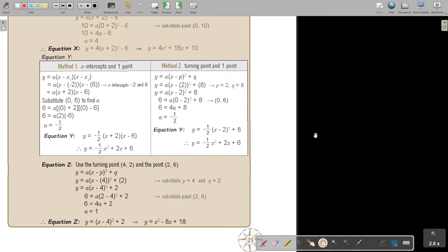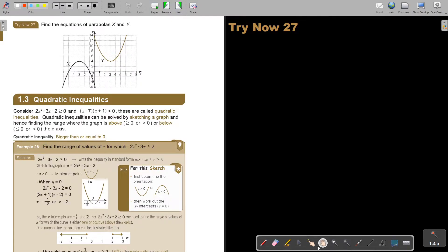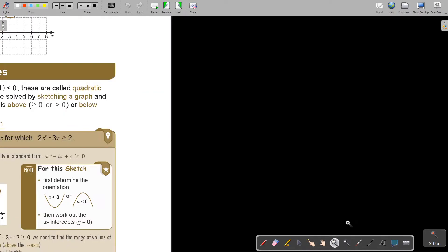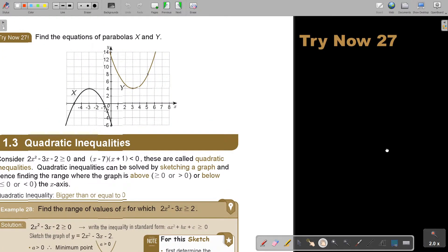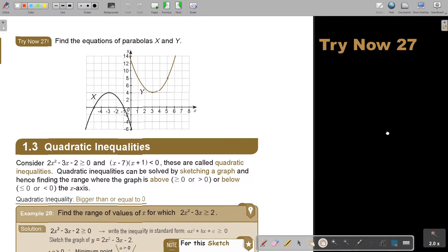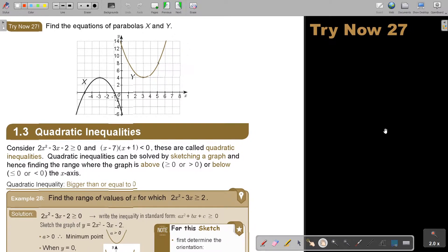So this is a very good example showing you how you can use the different methods just to find the equation of a quadratic parabola. I want you to stop the video and I want you to do this one. There is only one. Try now 27, and you can continue the video as soon as you are finished.